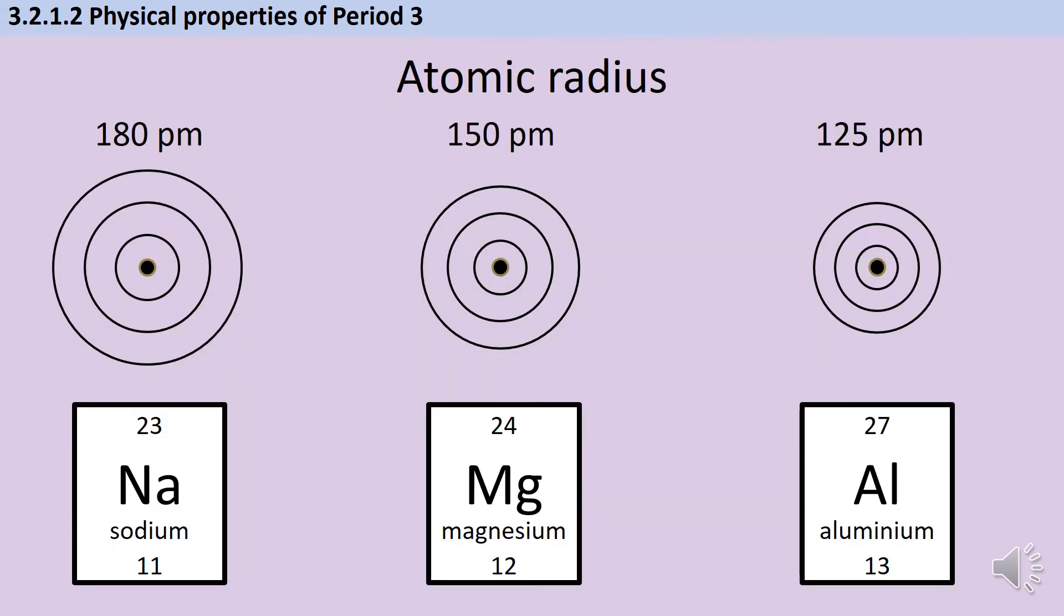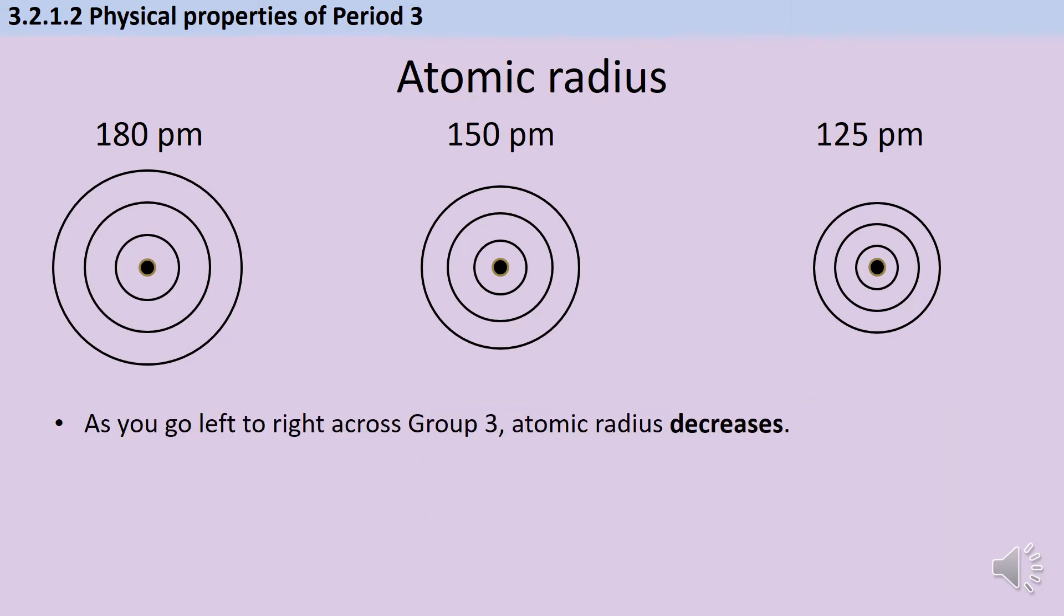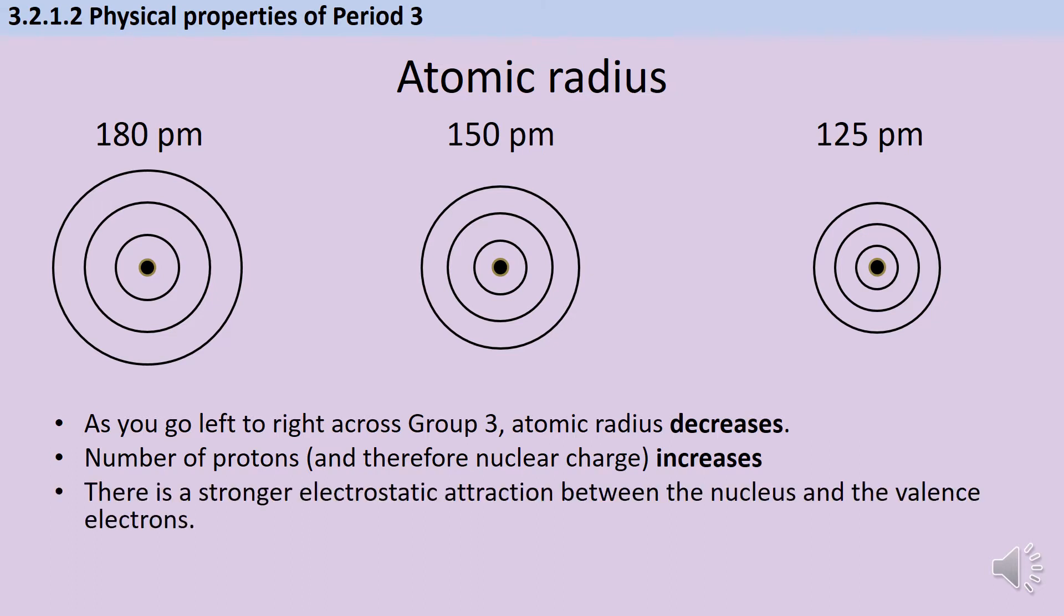The first physical trend that you need to know about is atomic radius. If we look at just the first three elements in period 3, you'll see that atomic radius decreases from 180 picometers for sodium to 150 for magnesium and 125 for aluminium, and this trend continues across the period, with the atoms getting smaller and smaller as you go left to right. As you go left to right across the periodic table, the atomic number is going up by one each time for each new element, and the reason for that is that each new element has one more proton in its nucleus, and therefore the positive nuclear charge is also increasing. Since the nucleus is positively charged and the electrons are negatively charged, there's an electrostatic force of attraction between them, so the nucleus is pulling those electrons closer and closer in. Therefore, the stronger the electrostatic attraction is, the closer those outer shell electrons will be to the nucleus, and that's why, as we go left to right, we see those electrons being pulled in closer and closer.